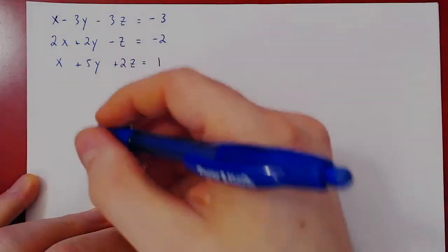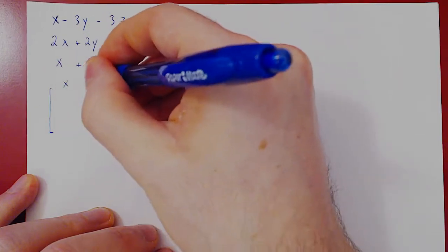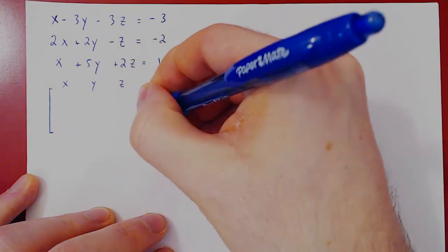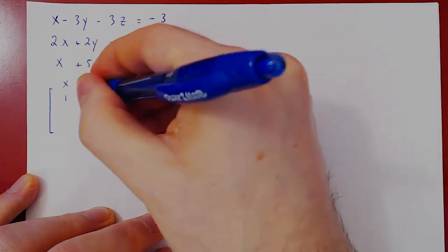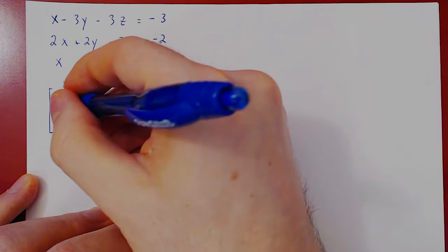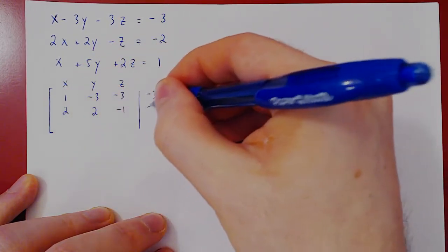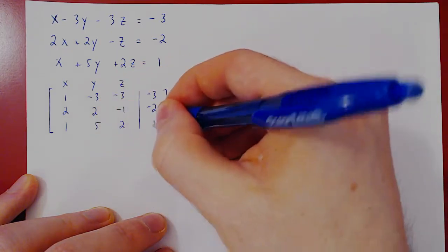As always, we construct the augmented matrix of the linear system. First row: 1, negative 3, negative 3, negative 3. Second row: 2, 2, negative 1, negative 2. Third row: 1, 5, 2, 1.